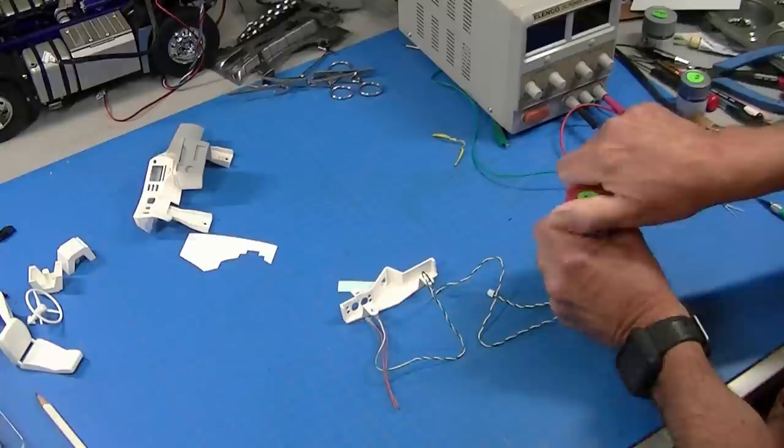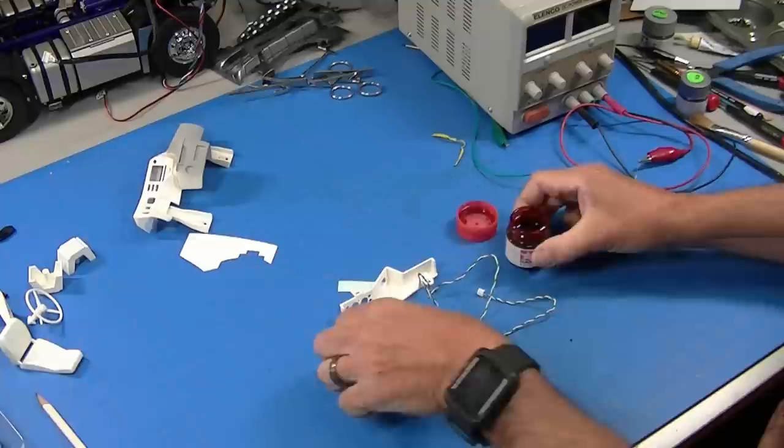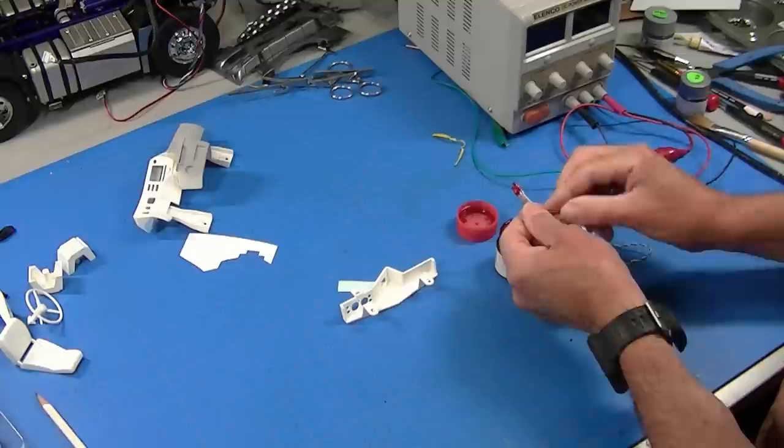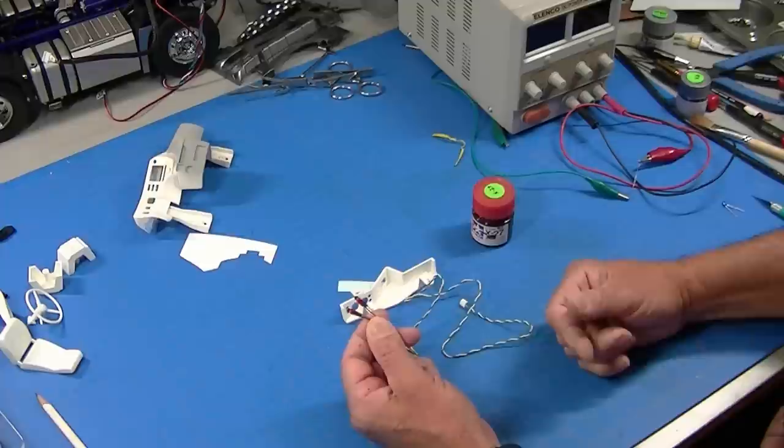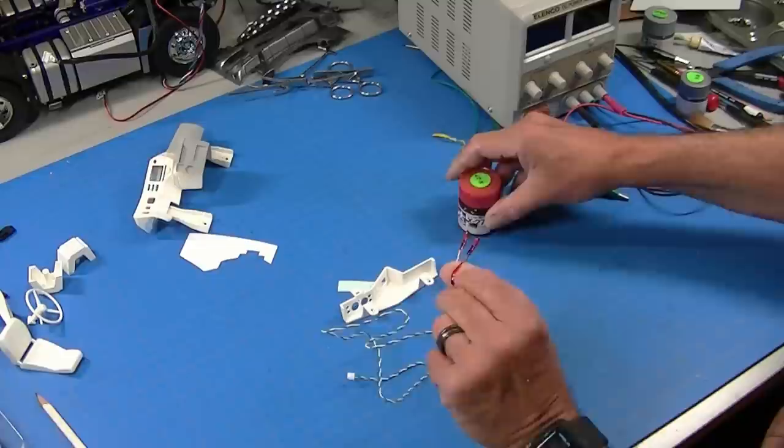The only problem is these bulbs are clear. But I can fix that by just taking some Tamiya clear red. And just dipping the bulbs in it. And letting them dry. So I'll probably do that a couple of times and get my red bulbs. You can also use fingernail polish or something else that leaves a clear red finish to make the bulbs red.